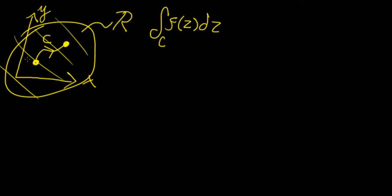If you remember something from vector calculus or multivariable calculus where we talked about line integrals, you would know that when dealing with line integrals, you want to direct the integral along some path c. That path can be arbitrary, and we denote it by c. Between any two points we can define a whole bunch of different paths, and one of the properties of line integrals is the independence of the path.